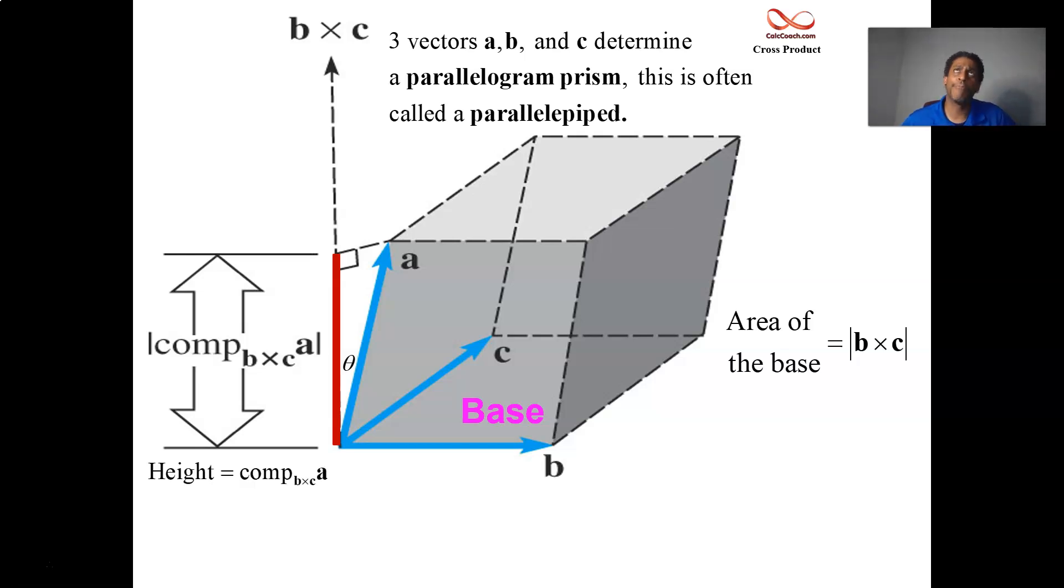Now remember, back when we did the dot product series, we learned how to project a vector onto another vector. And we learned that in order to do the projection, we can find out how long that projection vector is by doing the dot product between them. That's the numerator. And the denominator is the magnitude of the vector that you're projecting onto.